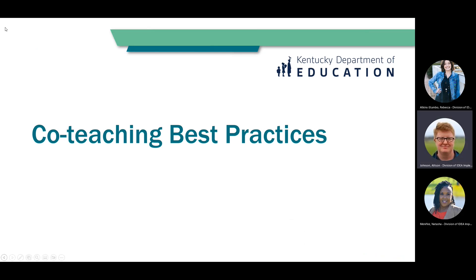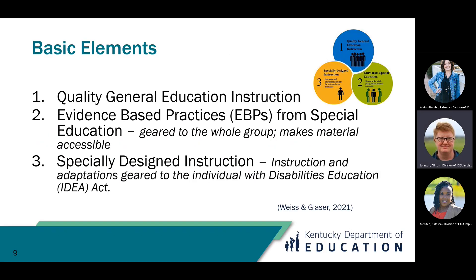Now we're going to discuss co-teaching best practices. When we look at the basic elements of co-teaching best practices, Weiss and Glazer did a really interesting research study and found that there are three main elements of really good co-teaching. Really good co-teaching starts with quality general education instruction — high quality content instruction, including evidence-based practices and high leverage practices from that content area. For example, this would be class-wide tier one instruction using evidence-based practice strategies to teach early literacy.